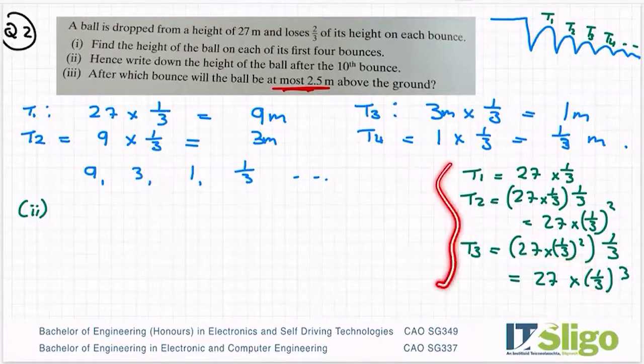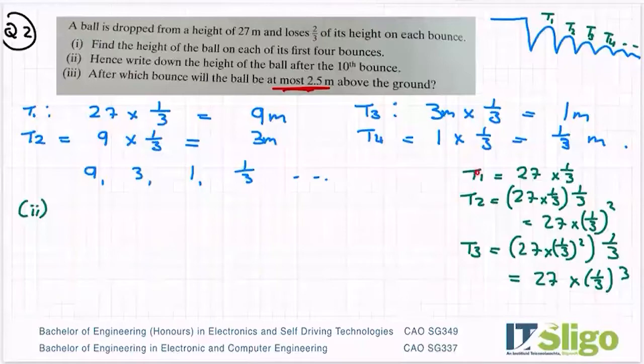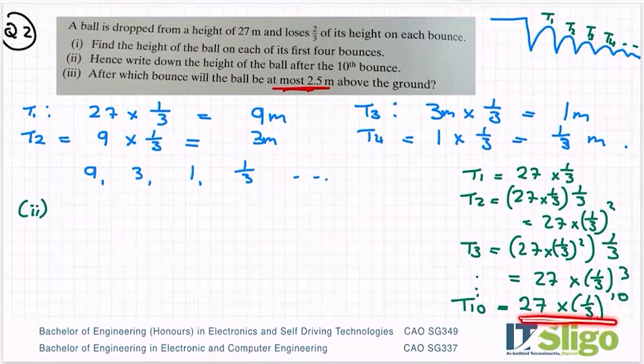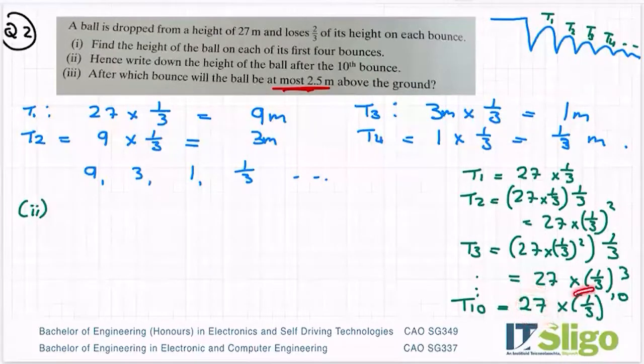So why am I doing it this way in green? Well, I'm trying to tie the n number to what I'm actually doing. There's my n number again to a power, the n number to a power. So therefore, by the same pattern, T10 would be equal to take that 27 and reduce it down by a third 10 times. That's what that means. Take the 27 and reduce it down by a third 10 times.